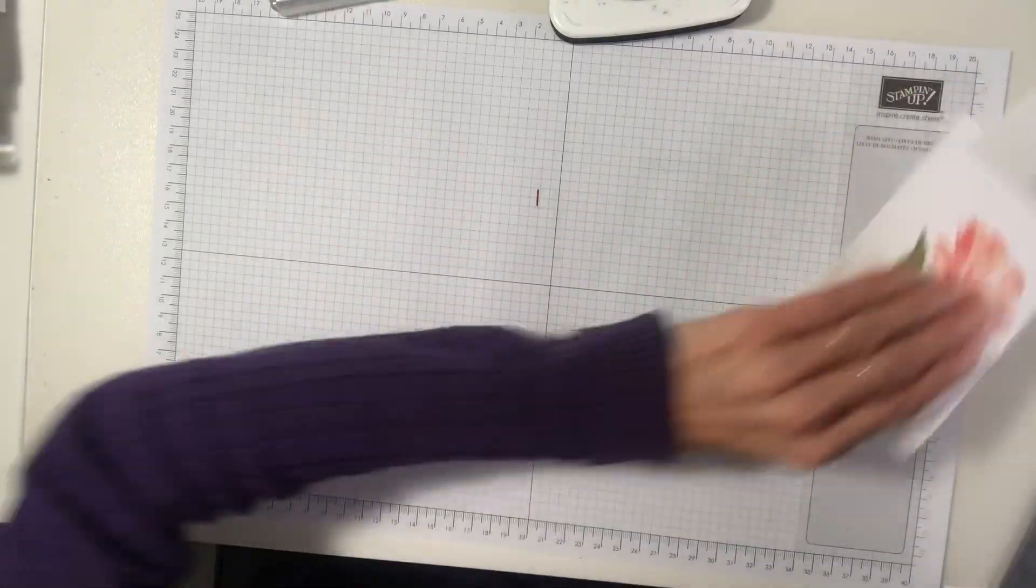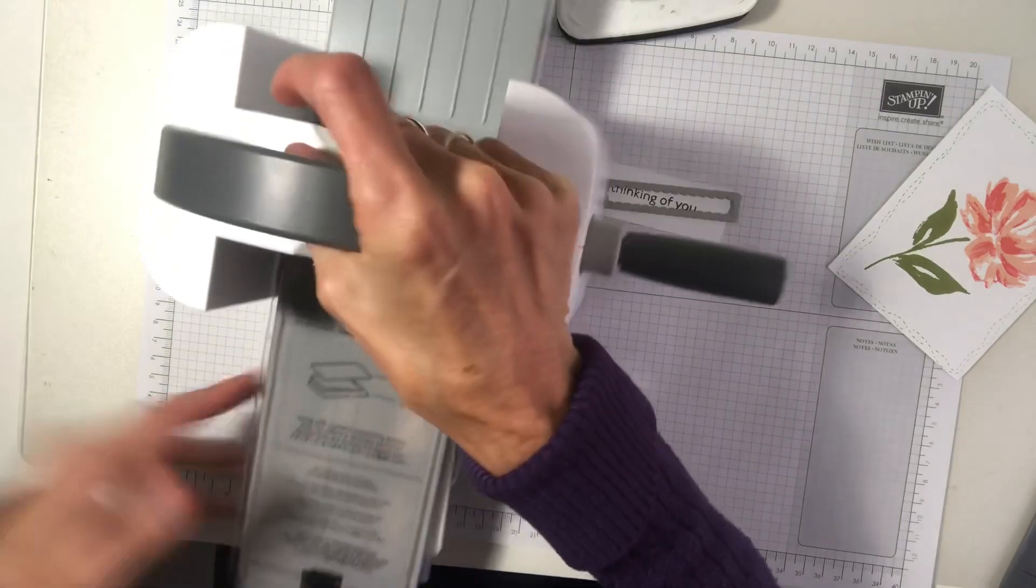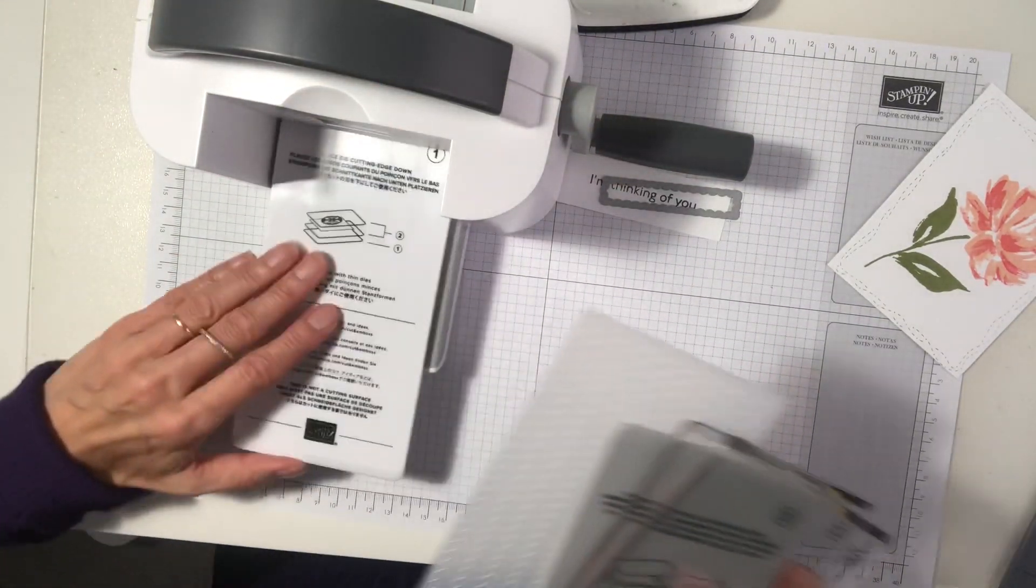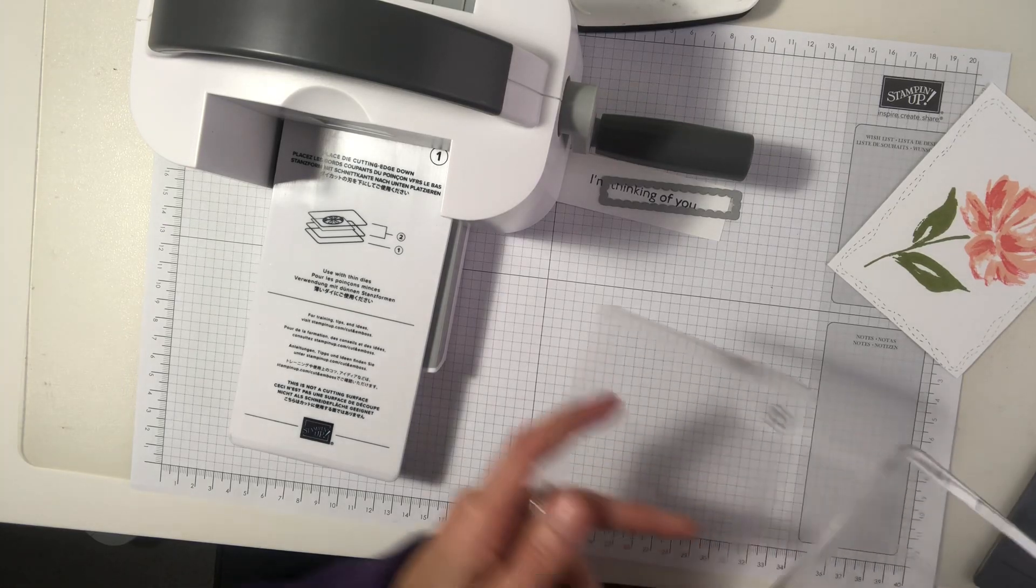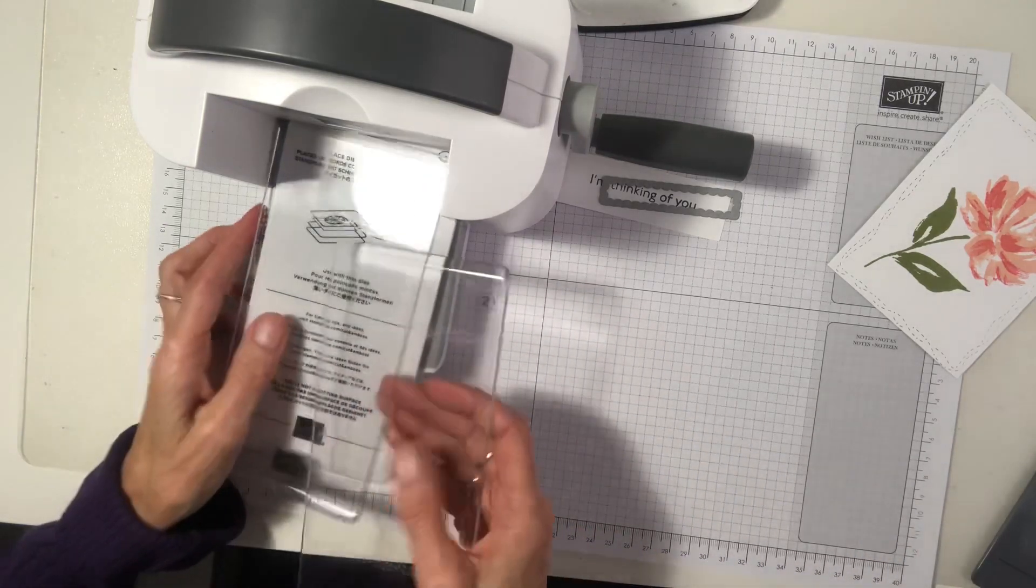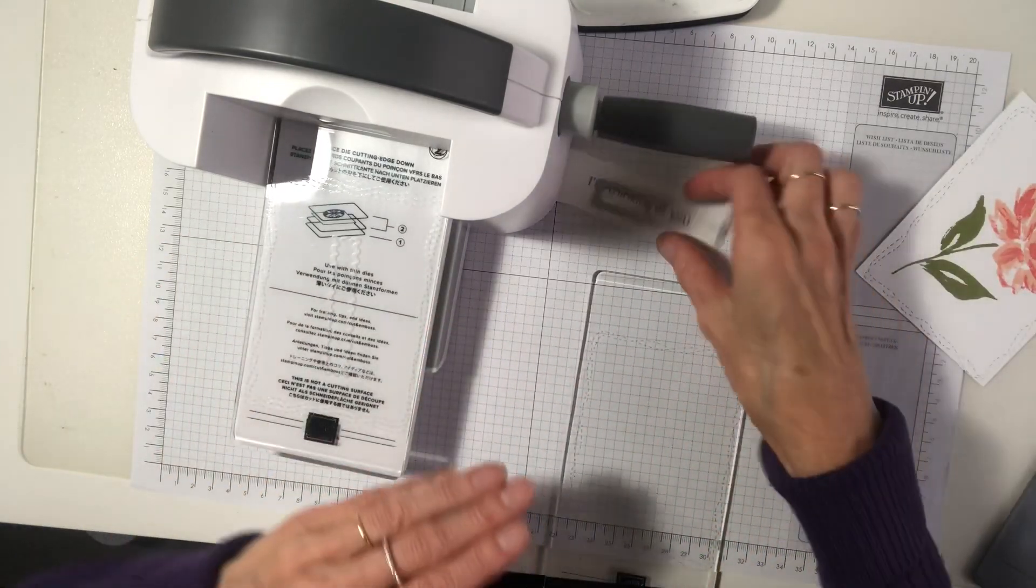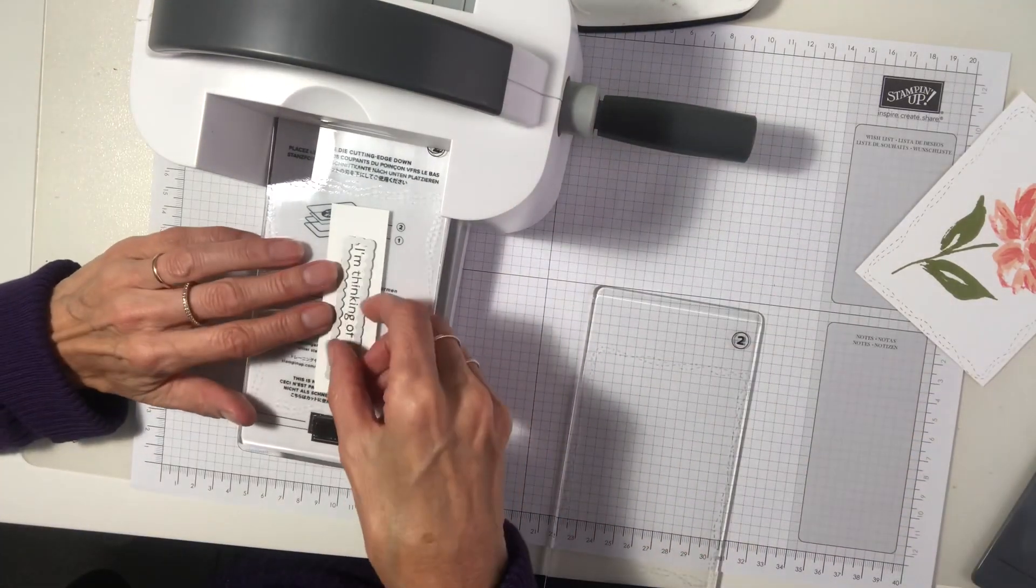I think we need our little mini machine come in again. So this time we're going to die cut. So I need our bottom platform. And this time we're going to die cut. So we need our number two plate. So let's get this. We can just line that up on a plate. Can you see that?